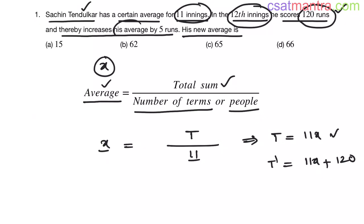Now after scoring 120 runs in 12 innings, his average increases by 5 runs. Initially his average is x, the average for 11 innings. Now his average increases by 5 runs. That means new average is x plus 5.